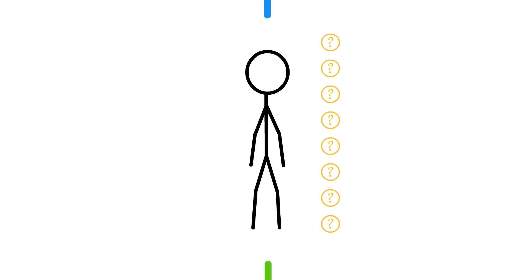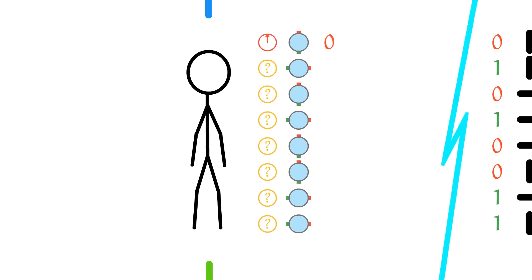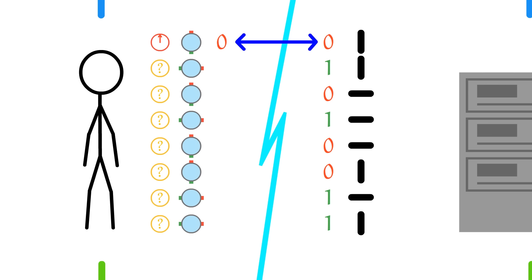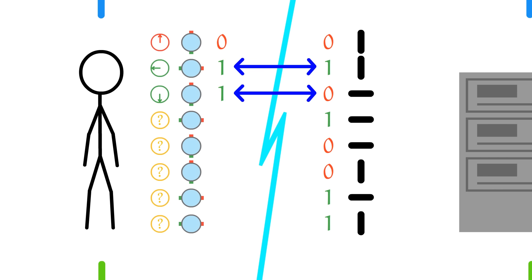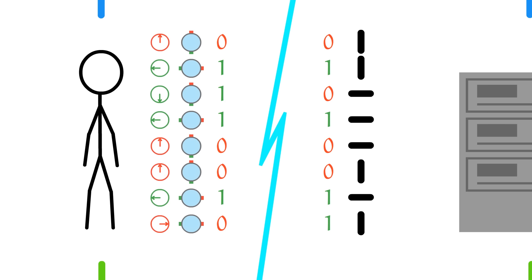Now, you don't know which qubits are vertical and which are horizontal, so you randomly guess, measuring some of them vertically and others horizontally. Each time, you have a 50-50 chance of guessing right, since there are only two possible orientations and you have to pick one of them. If you do guess right, that bit will be the same for you as it is for the server. If you guess wrong, that bit is at risk for being wrong.